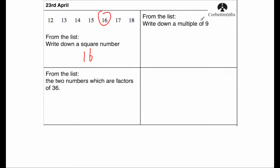Next question. From the list, write down a multiple of 9. So the multiples of 9 are 9, 18, 27, so the answer here will be 18.